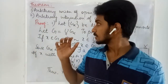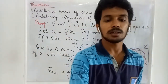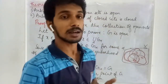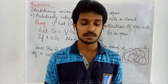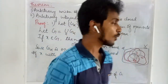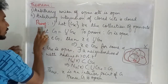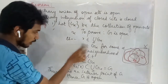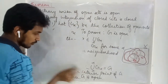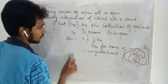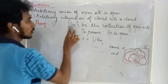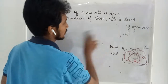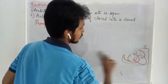Since X is an arbitrary point we chose in G and it is an interior point of G, this concludes that the set G is open. Now, using the same idea, we are going to prove the second part: that arbitrary intersection of closed sets is closed.